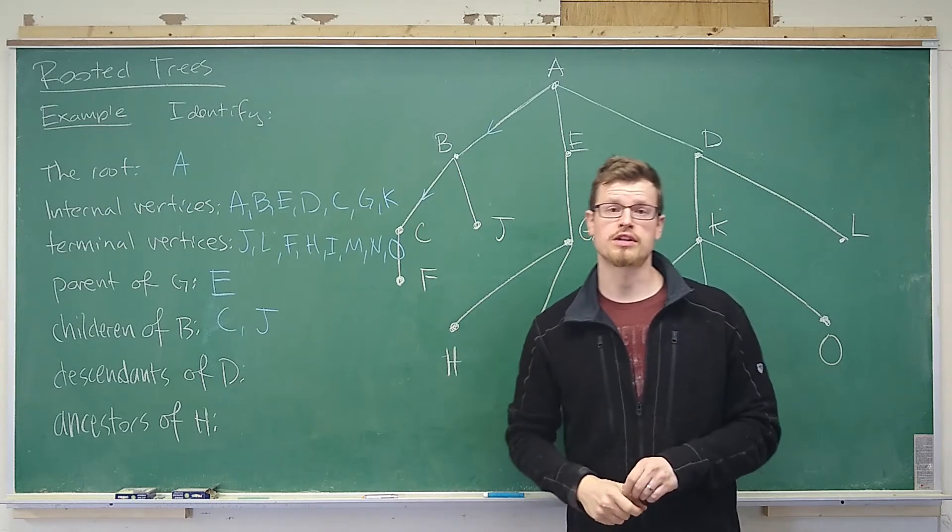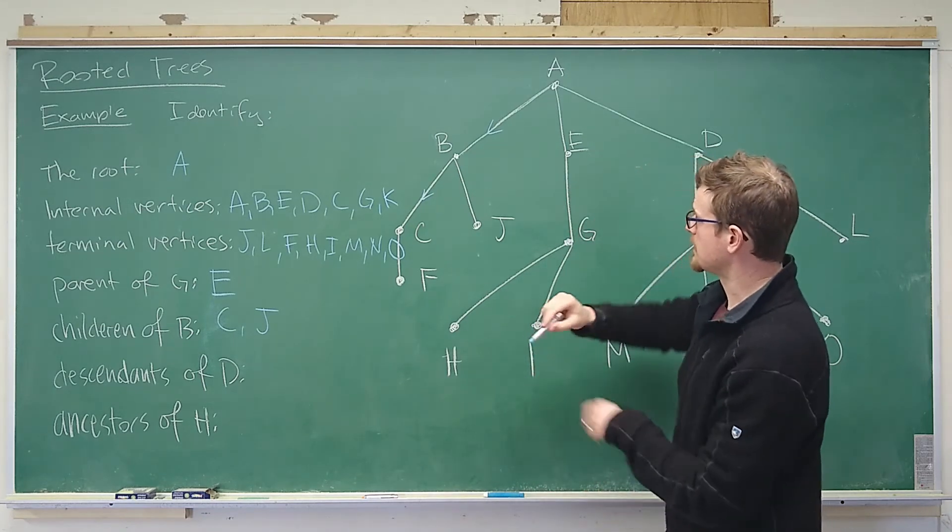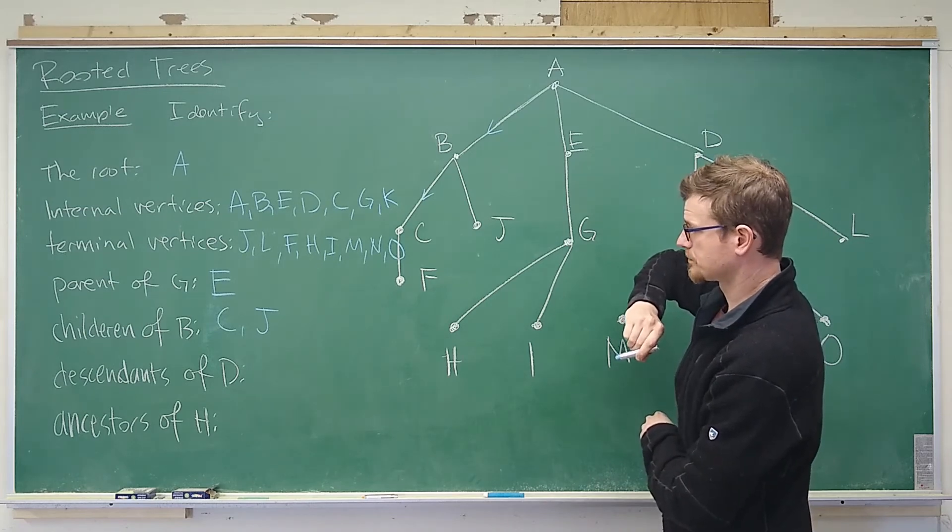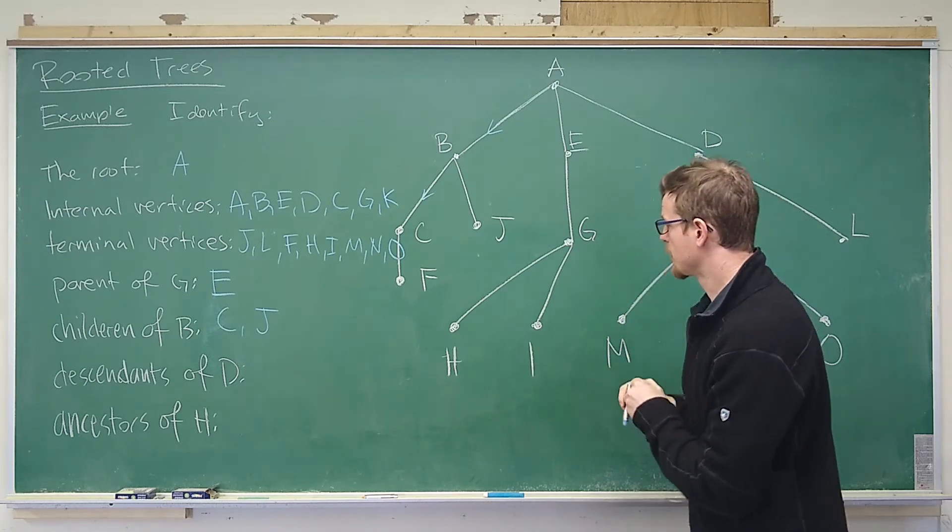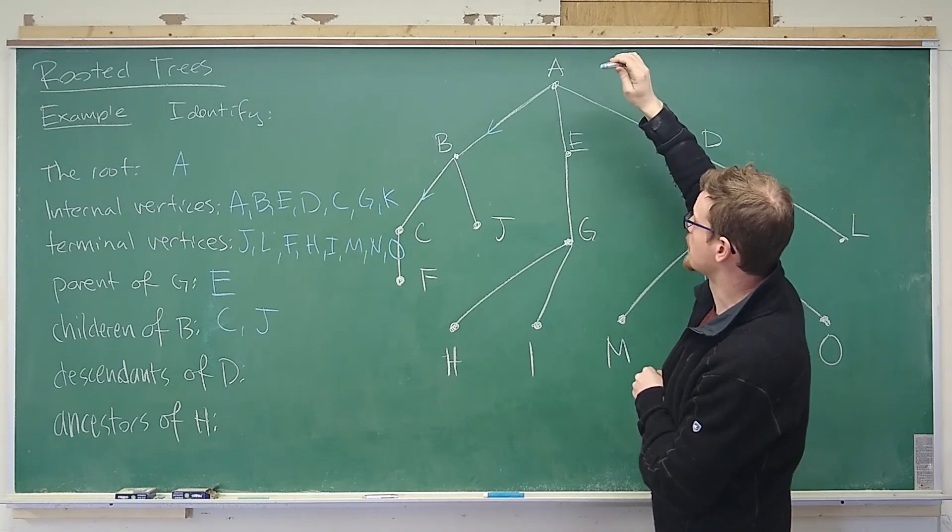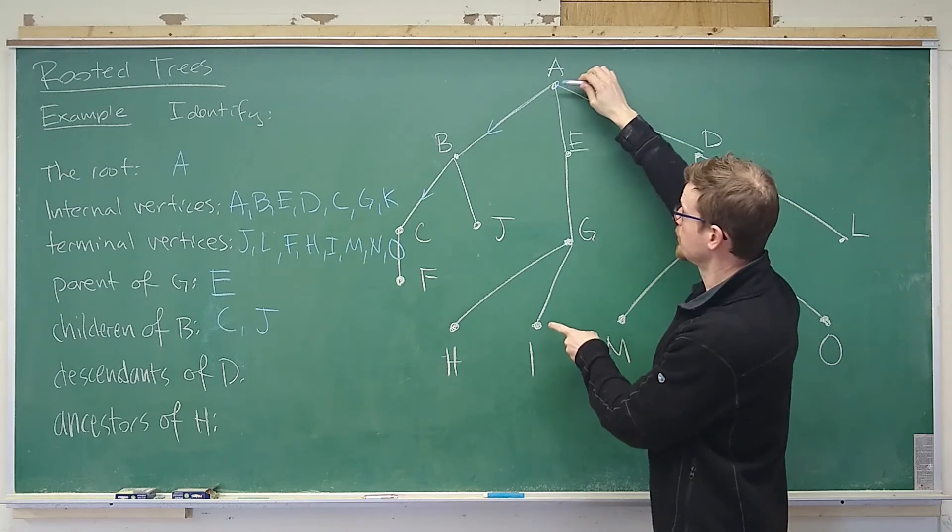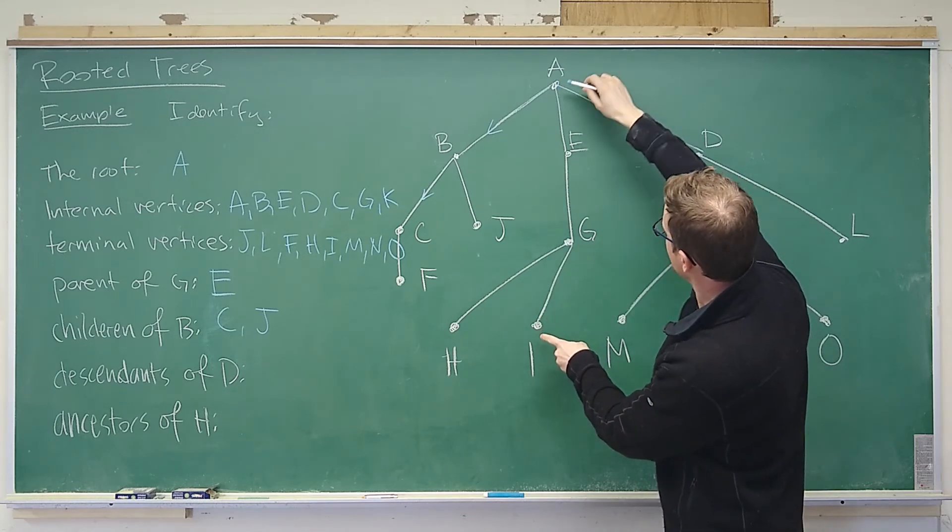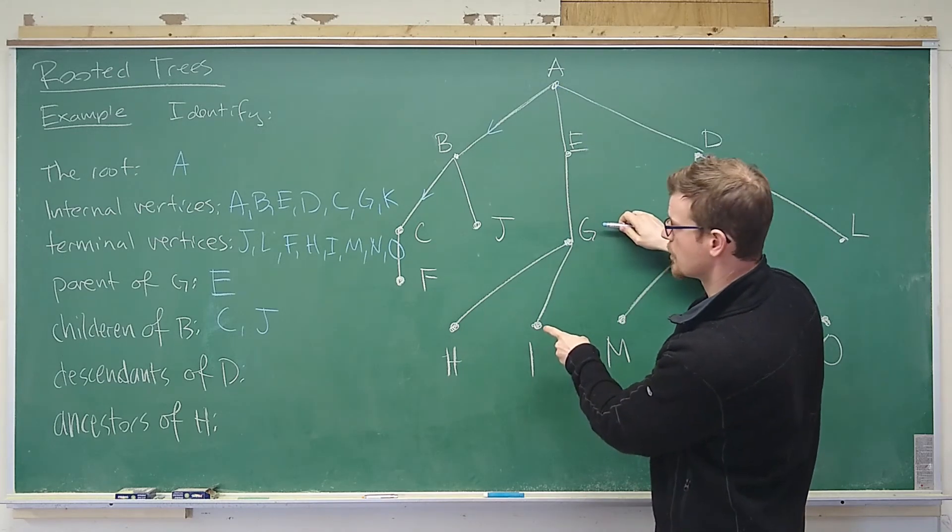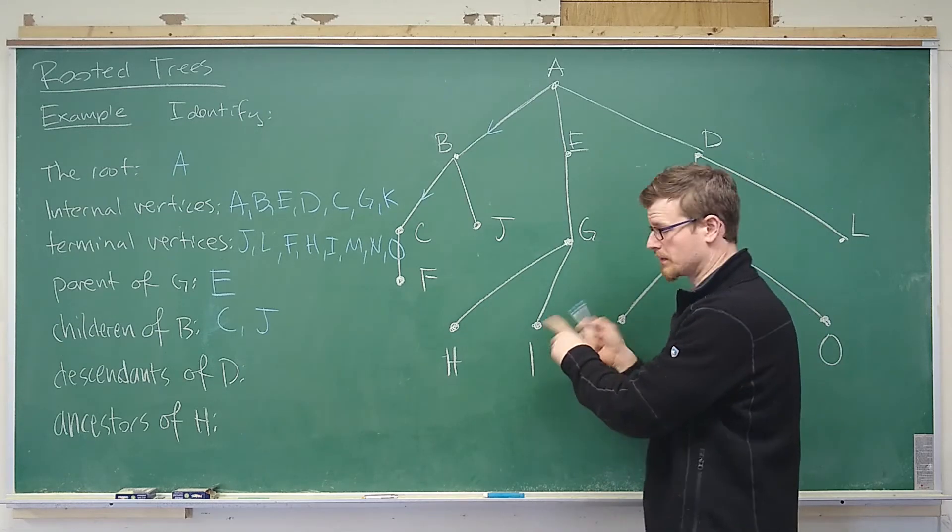Next we want to determine the descendants of d. Now the descendants... Oh well actually let's put it this way. If we were to consider a path from a to i, for example, then a, e, and g would all be the ancestors of i. Okay.